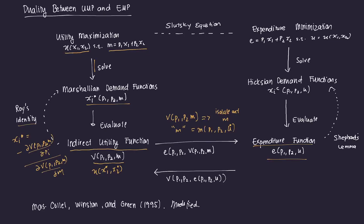The expenditure minimization process has an objective function of expenditure on goods times their respective prices — p1x1 + p2x2 — subject to some utility target. If you solve the first order conditions of this constrained optimization process, you get the Hicksian demand functions. And if you evaluate the initial expenditure expression using these Hicksian demand quantities by plugging in p1x1c + p2x2c, you can derive the expenditure function, which is a function of prices and utility.